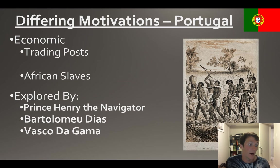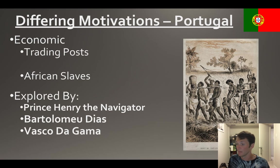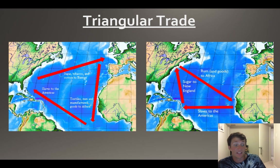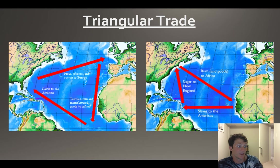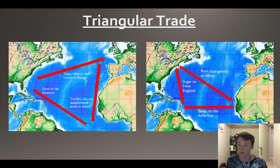Don't forget the Portuguese - their big thing is going to be these trading posts set up along the western coast of Africa, and a lot of the slave trade is going to come from these. We talked about triangular trade: you have slaves moving from Africa to the Americas, and from the Americas they load up with tobacco, sugar, and other raw materials, bringing them to Europe where they're manufactured into goods.